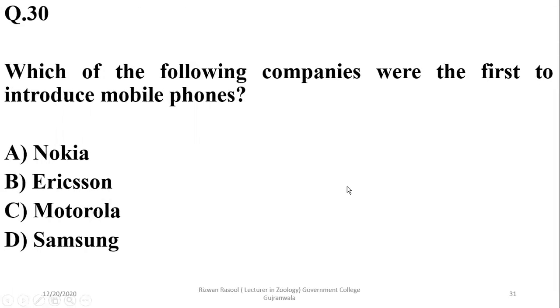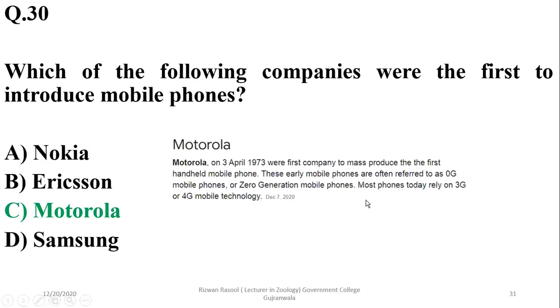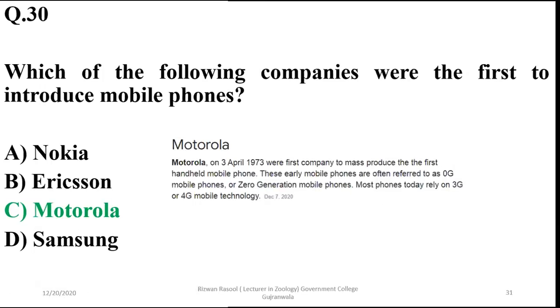Question 30: The first company to introduce mobile phones was Motorola — C is the right option. In 1973, Motorola was the first company to mass-produce a handheld mobile phone.